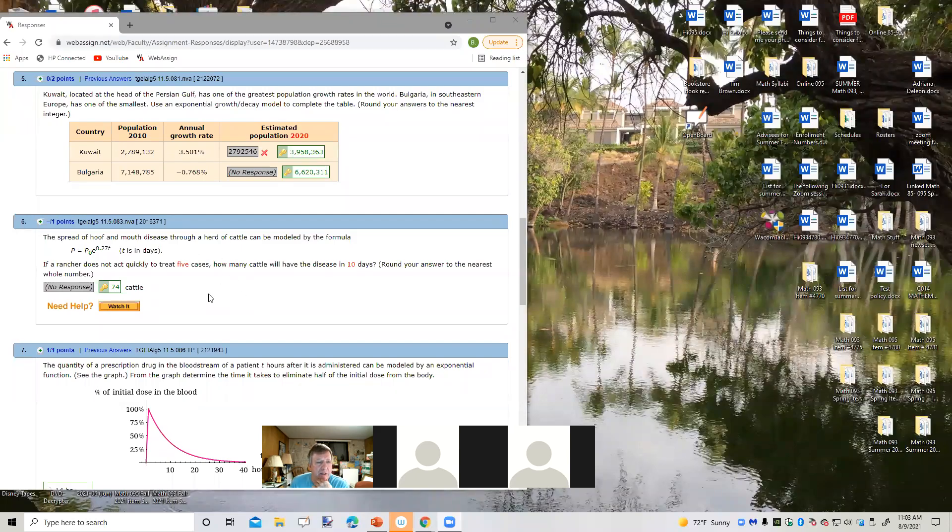Kuwait is located at the head of the Persian Gulf, has one of the greatest population growth rates in the world. Bulgaria in Southeast Europe has one of the smallest. Use an exponential growth decay model to complete the table. Round your answers to the nearest integer. Okay, so this is number five, 11.5 part two. Okay, so we're supposed to use the exponential growth decay model. So A equals P times e to the rt power.